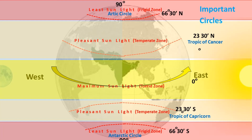The area between the Tropic of Cancer (23 degrees 30 minutes north) and 66 degrees 30 minutes north receives pleasant sunlight and is called the Temperate Zone. Similarly, in the southern hemisphere, the area between the Tropic of Capricorn (23 degrees 30 minutes south) and 66 degrees 30 minutes south receives pleasant sunlight. The areas between 66 degrees 30 minutes and 90 degrees in both hemispheres receive the least sunlight and are called the Frigid Zone.